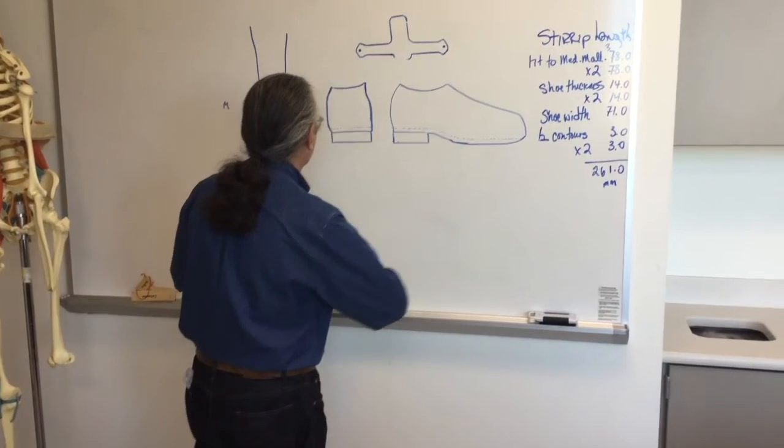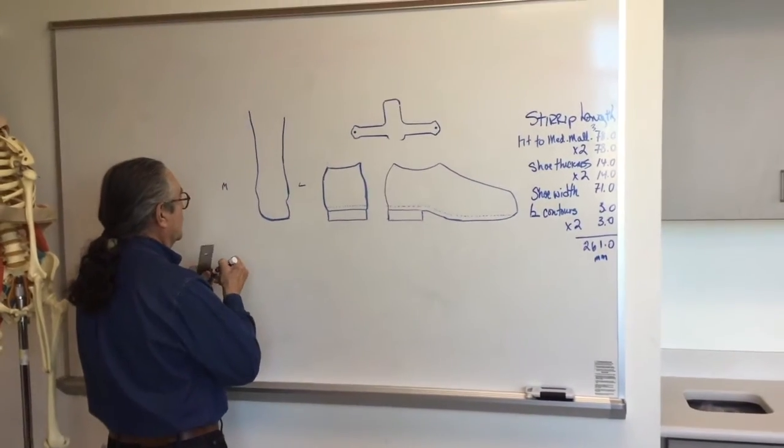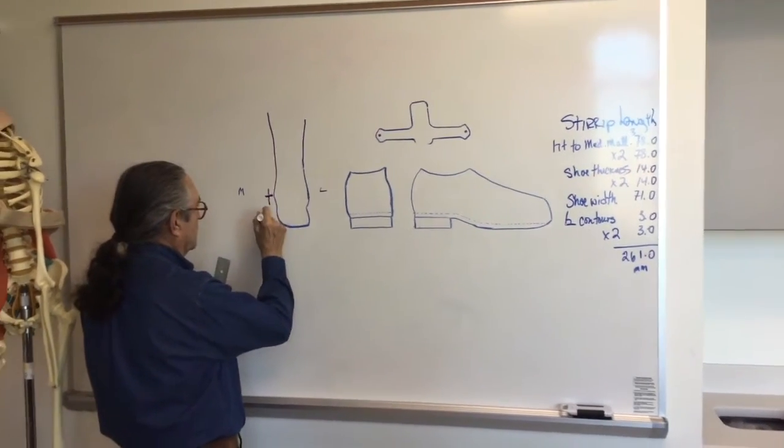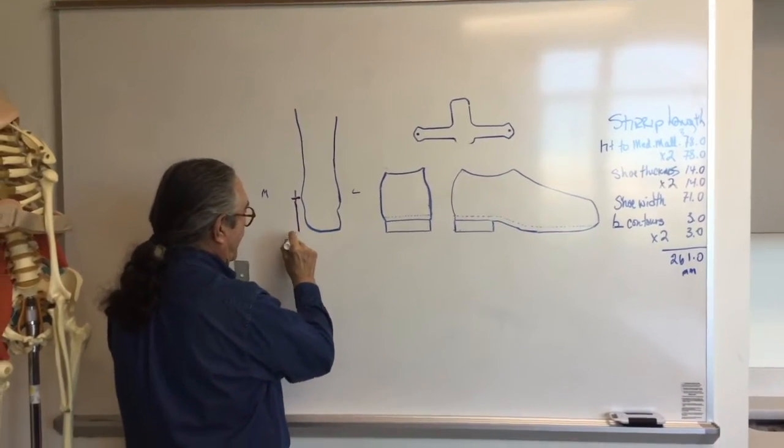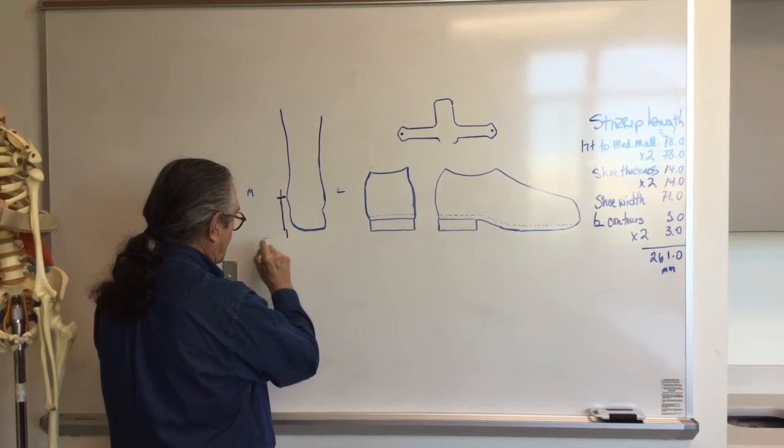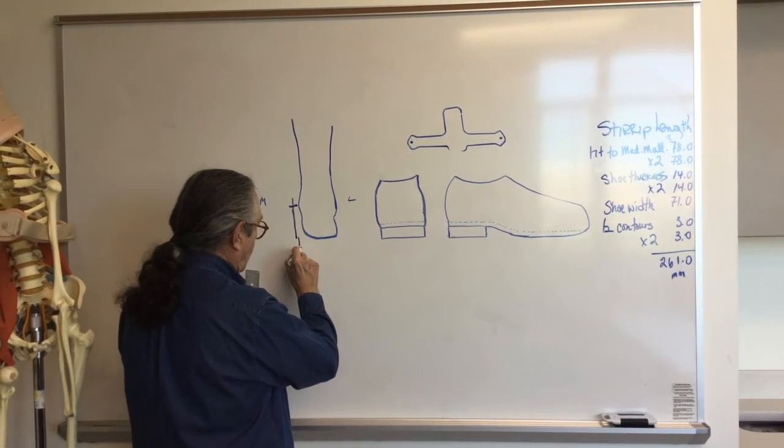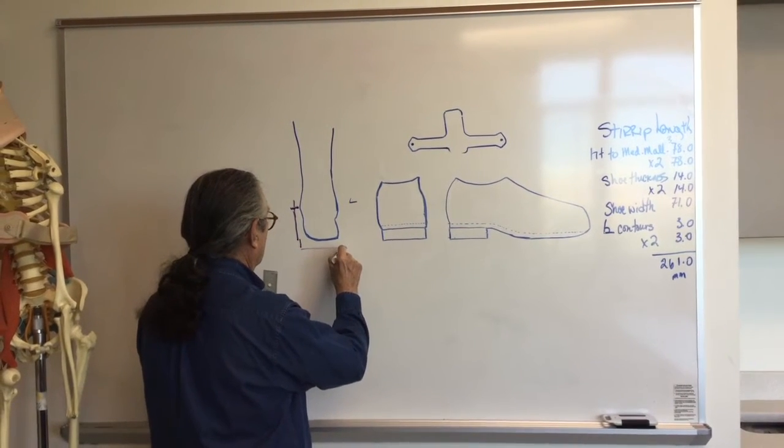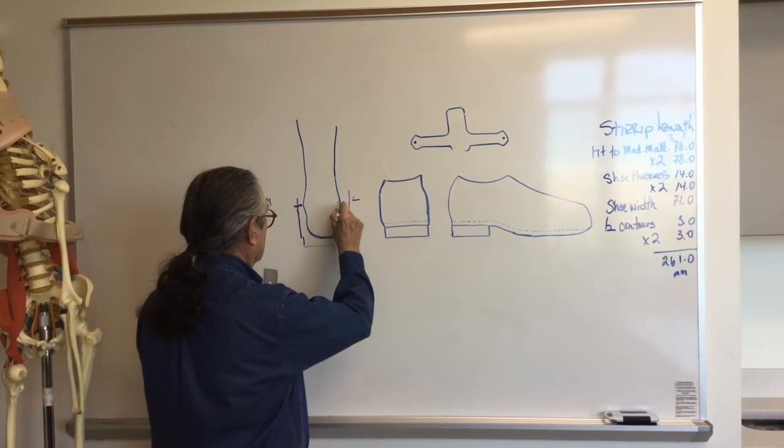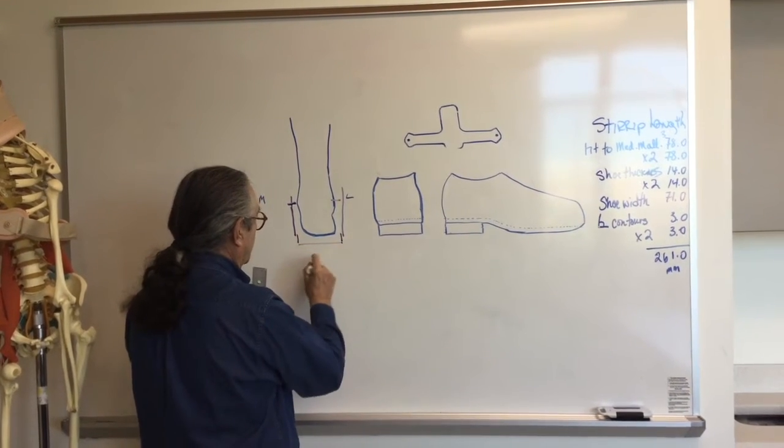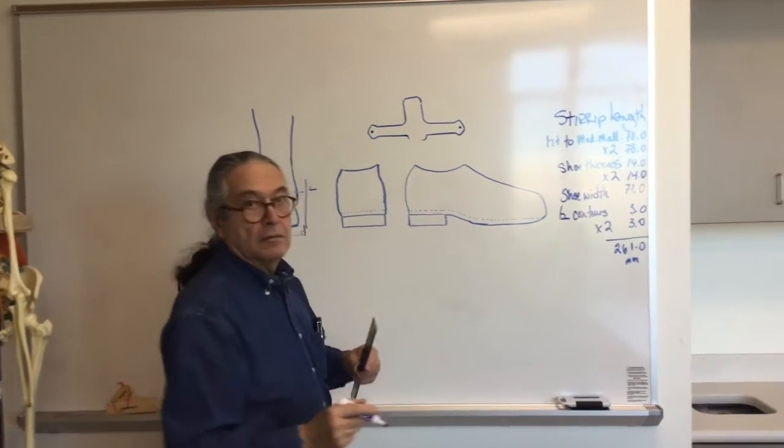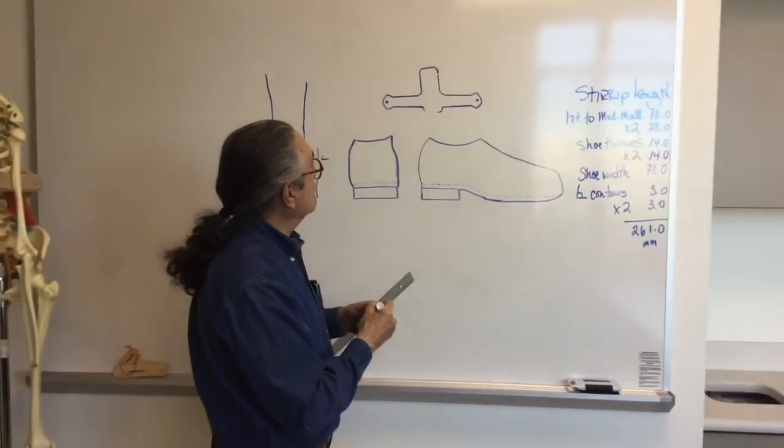We can actually draw that out here. So we're looking at the stirrup, with the articulation, the height to the ankle, the sole of the shoe, width of the shoe, and then we repeat that. As you see, there are two 90-degree contours here and here, and that gives us the reason for doing that.